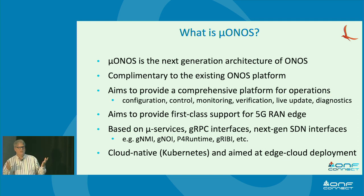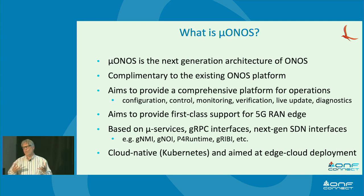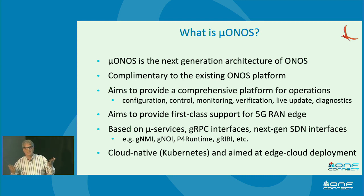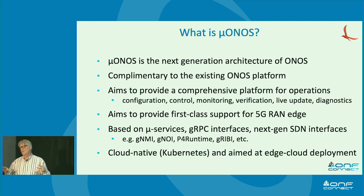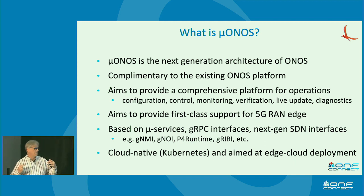The current ONOS I like to describe as a block of granite — it's a big monolithic Java program with a lot of APIs, but basically one single address space. We want to move much more to a microservices, gRPC kind of model, using Kubernetes to deploy containers that support different things. People will be able to write their own applications that don't run as part of our address space, which is something that's difficult to do with the current ONOS.